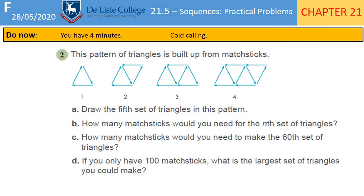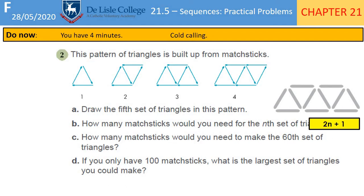Here's your first challenge — pause the video for about 4 minutes and work through it. You should be able to add the additional 2 matchsticks and draw the next diagram. How many matchsticks for the nth set of triangles? The nth term rule is 2n + 1 — the constant is adding 2 each time, and 2 times 1 plus 1 gets you 3. How many matchsticks for the 60th set of triangles? Substitute 60 in: 2 times 60 is 120, plus 1 is 121.